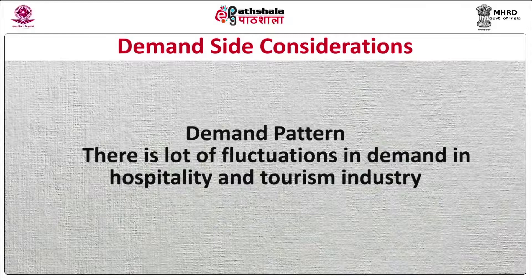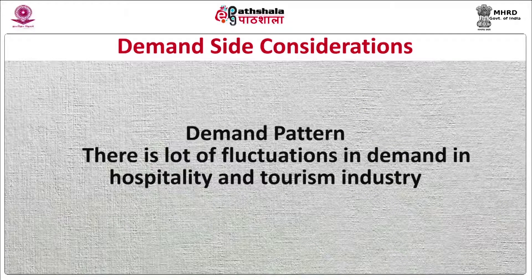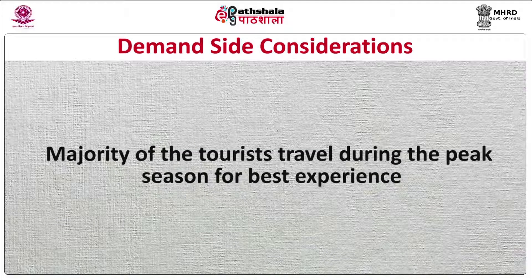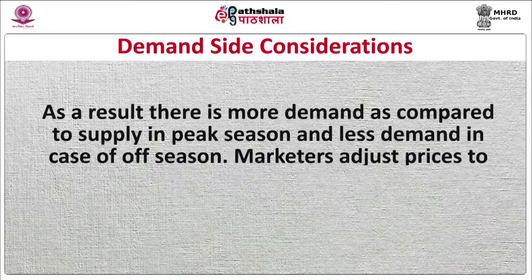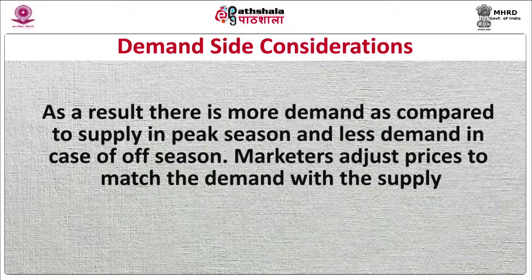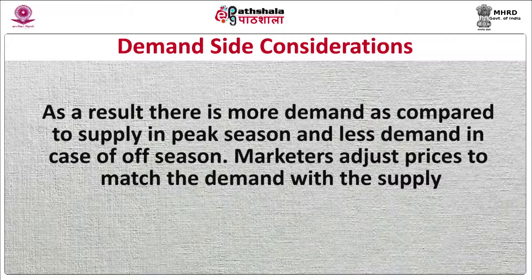Number three, Demand Pattern. There is a lot of fluctuation in demand in the hospitality and tourism industry. The majority of tourists travel during peak seasons for the best experience, resulting in more demand than supply in peak season and less demand in off-season. Marketers adjust prices to match demand with supply — high prices are charged in peak season to offset losses in off-season. In India, the majority of international tourists visit between September and March, while the remaining year is off-season due to heat and humid weather. Marketers charge high prices during peak season but reduce prices in off-season to attract price-sensitive customers.